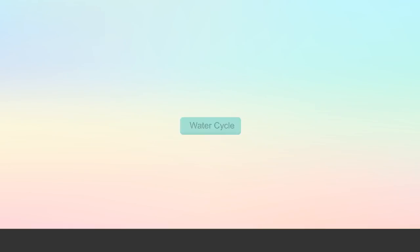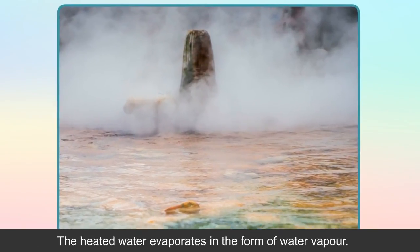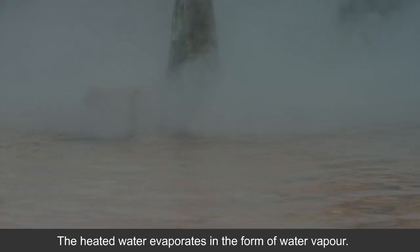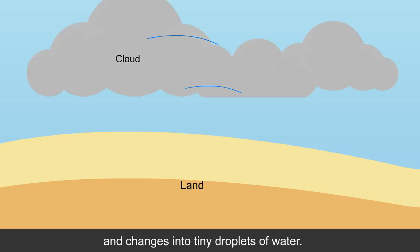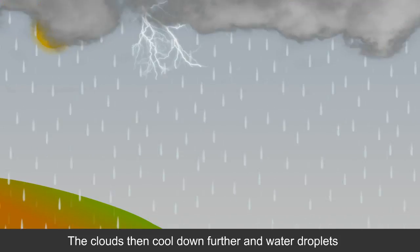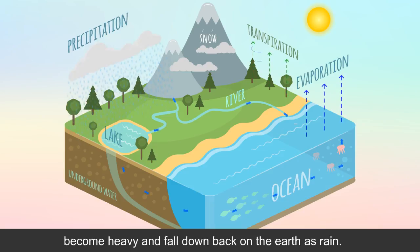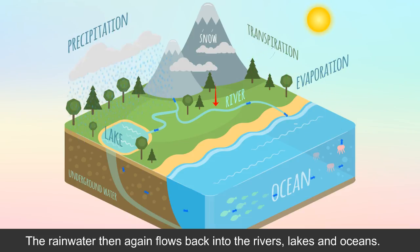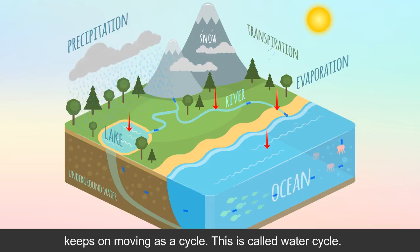Water cycle: The water in the ponds, lakes, rivers and streams is heated by the sun. The heated water evaporates in the form of water vapour. The water vapour rises and goes into the clouds. In the clouds, it comes in contact with cold air and changes into tiny droplets of water. These droplets together form bigger drops and form clouds. The clouds then cool down further and water droplets become heavy and fall back on the earth as rain. The rain water then flows back into rivers, lakes and oceans. Thus, the water of the oceans, lakes, rivers and streams keeps on moving as a cycle. This is called the water cycle.